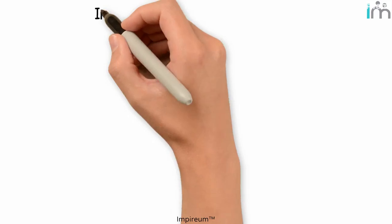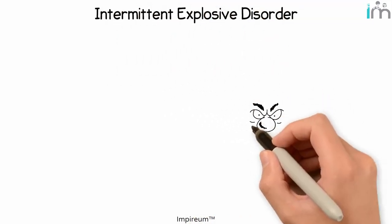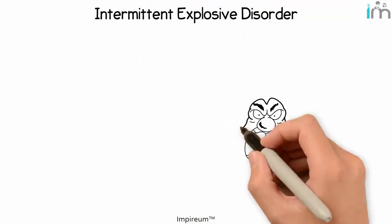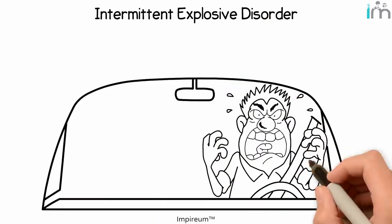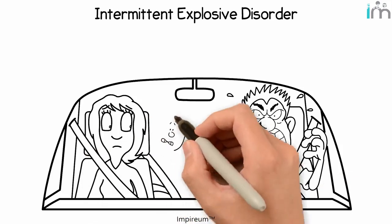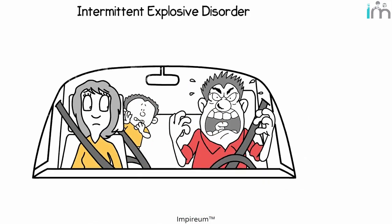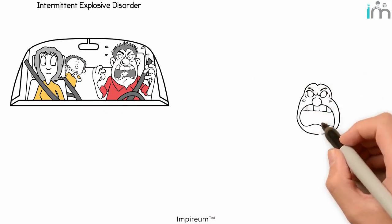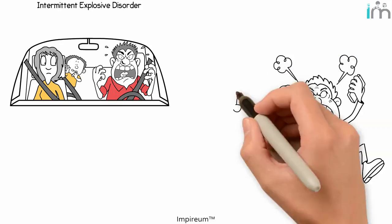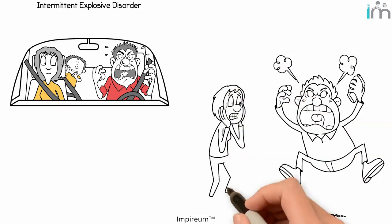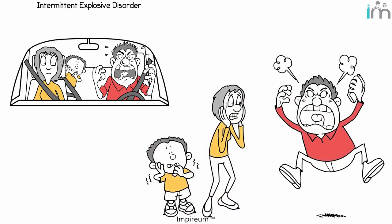One more DIC is Intermittent Explosive Disorder. In a nutshell, this displays externally when a person reacts to a situation in a way that's way out of proportion — like a road rage incident, for example. These explosions might become common occurrences for that person, with other people or things getting verbally or even physically hurt as a result of that outburst.